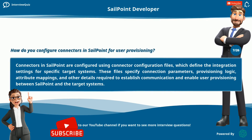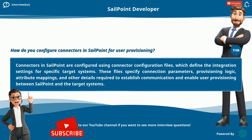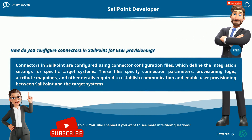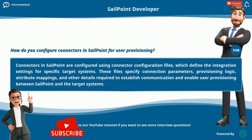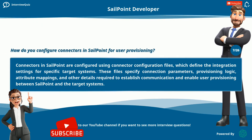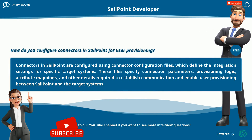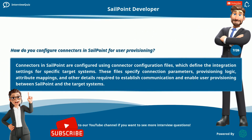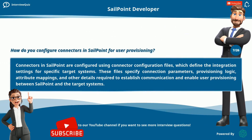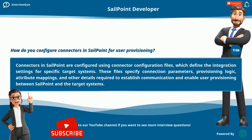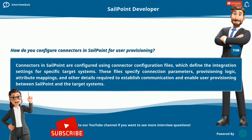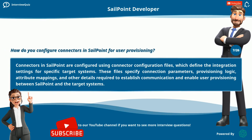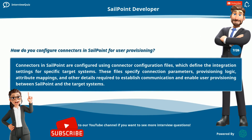How do you configure connectors in SailPoint for user provisioning? Connectors in SailPoint are configured using connector configuration files, which define the integration settings for specific target systems. These files specify connection parameters, provisioning logic, attribute mappings, and other details required to establish communication and enable user provisioning between SailPoint and the target systems.